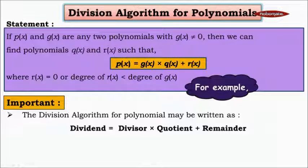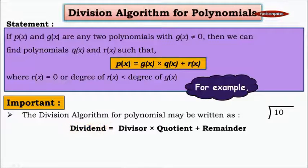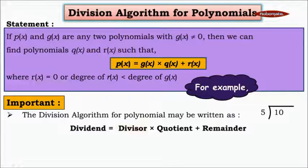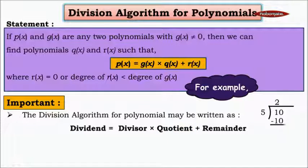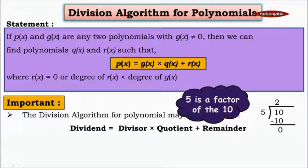For example, let us do a division where the dividend is 10 and the divisor is 5. When you divide 10 by 5, the quotient is 2 because 5 twos are 10. And the remainder will be 0. If you subtract 10 from 10, you get 0. Whenever the remainder is 0, we say 5 is a factor of 10.